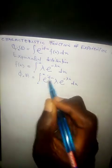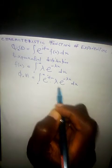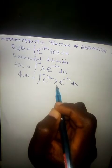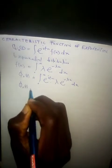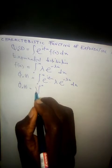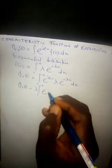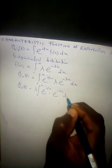We are integrating with respect to x. Lambda has nothing to do with x, which means lambda is a constant and we take it out. So we have phi of x of t equals the integral from zero to positive infinity, with lambda factored out, times exponential i theta t x multiplied by exponential raised to the power minus lambda x dx.